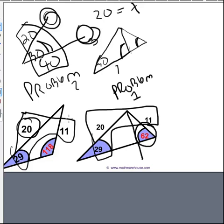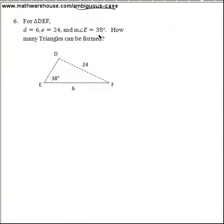So the ambiguous case of the Law of Sines only arises for triangles where you have two sides and an angle not in between those sides. Now let's look at the mathematics behind why this occurs.